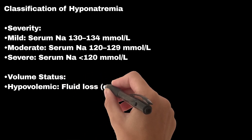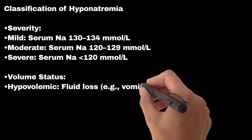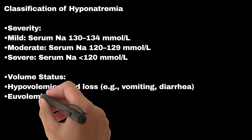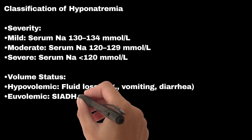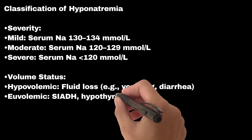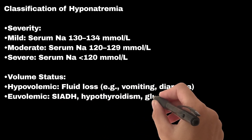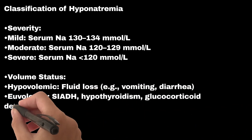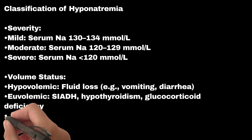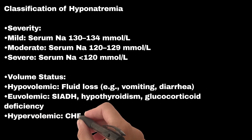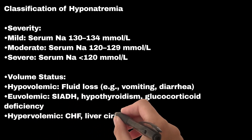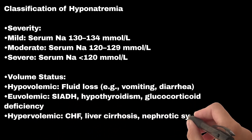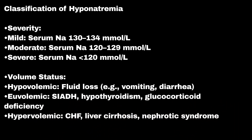Classification by volume status: hypovolemic — fluid loss such as vomiting and diarrhea; euvolemic — SIADH, hypothyroidism, glucocorticoid deficiency; hypervolemic — CHF, liver cirrhosis, nephrotic syndrome.